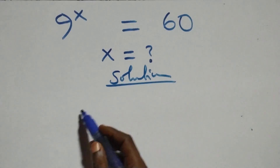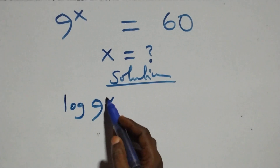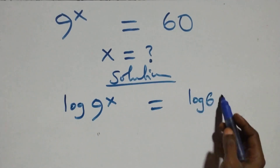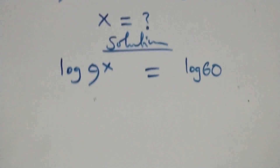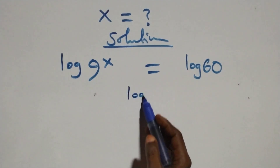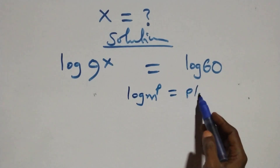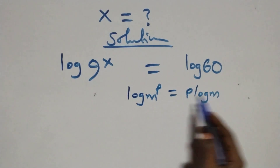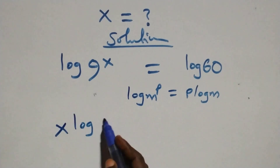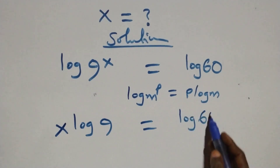What we have here: we take the log on both sides. As given, we have log of 9 raised to the power x equals log 60 on this side.